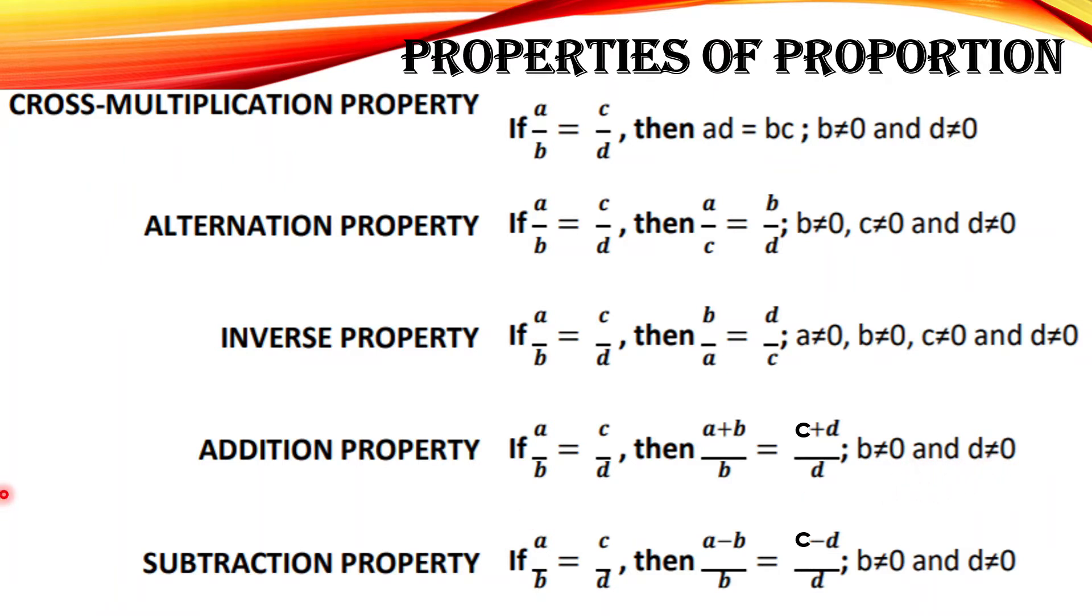Subtraction property: if a over b is equal to c over d, then a minus b over b is equal to c minus d over d, where b and d are not equal to zero. So you observe that again later on. I hope you can follow the properties of proportion.